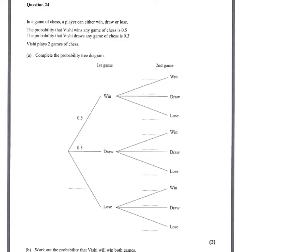So this question, we've got to fill in the tree diagram and then find the probability that Vinay wins two games of chess. Well, in his first game, he's either going to win, draw or lose, so those probabilities must add up to one. So the missing probability is 0.2.